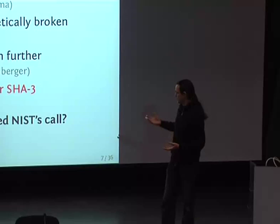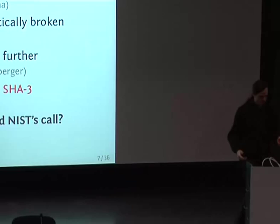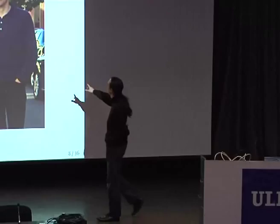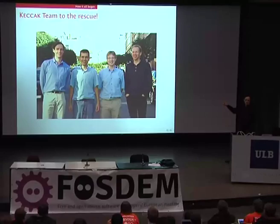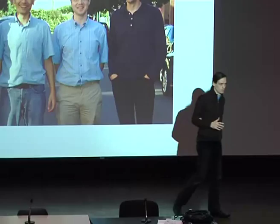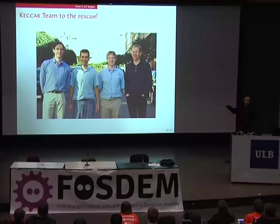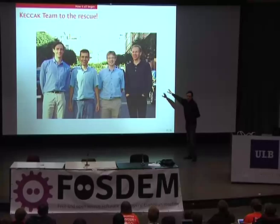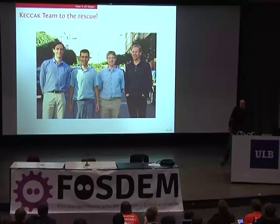Well, we did. We have Johan, Gilles, Guido, and myself. I would like to spend a bit of time with this picture, because it explains why we won the competition. The first thing — and probably you'll see it — is that we are very cute, and I guess that's a very good reason why we've been selected. The second reason is Johan, who already won the previous NIST competition for AES.